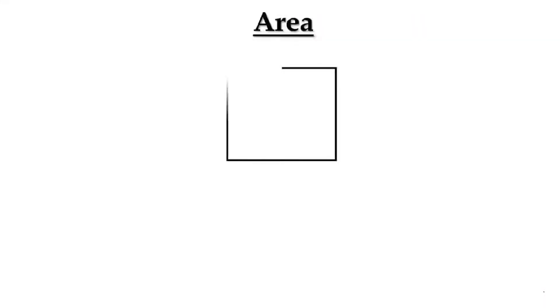Let us learn about the area of a square. What do you mean by area of any figure? The place occupied by an object is called its area. You can see the shaded part in this figure represents the area of the figure. The formula for finding area of a square is side into side, that is S × S.